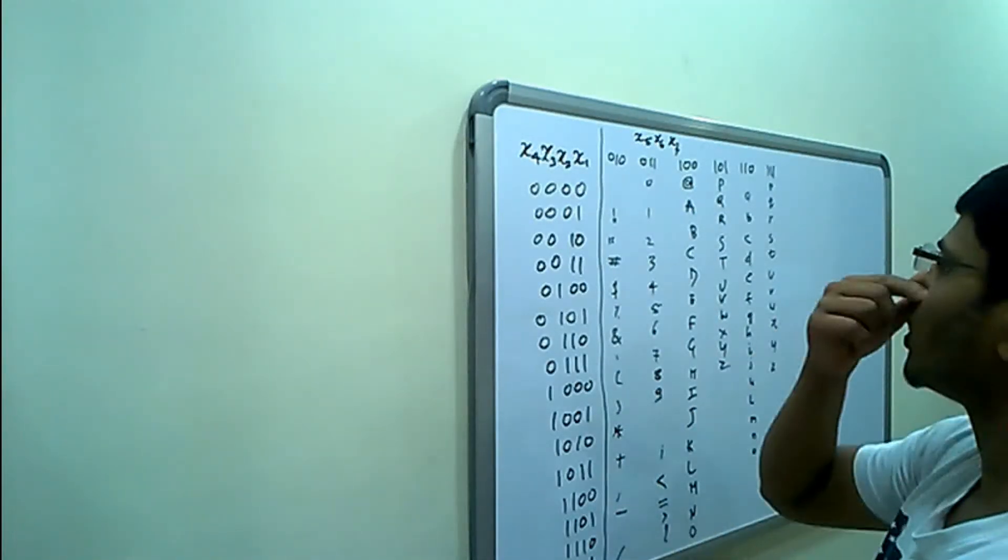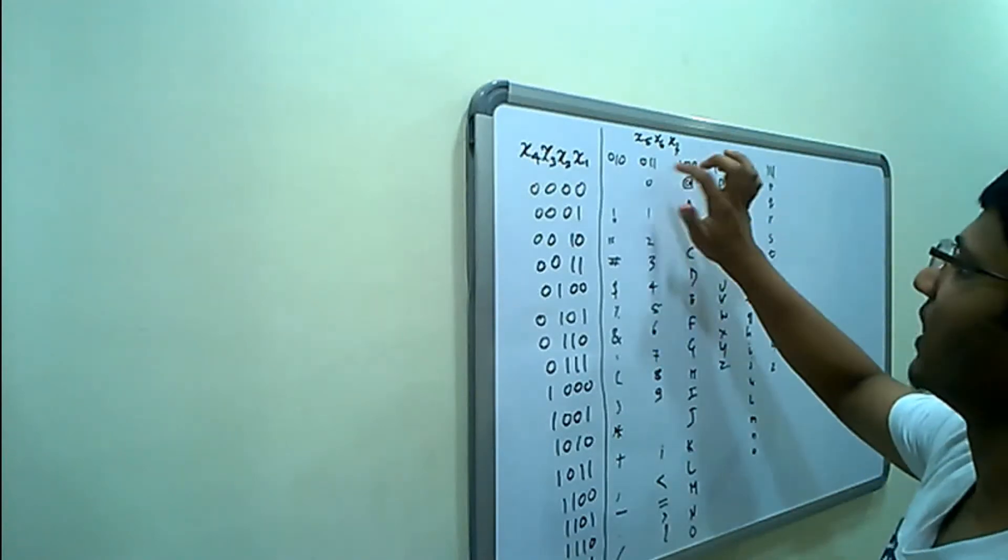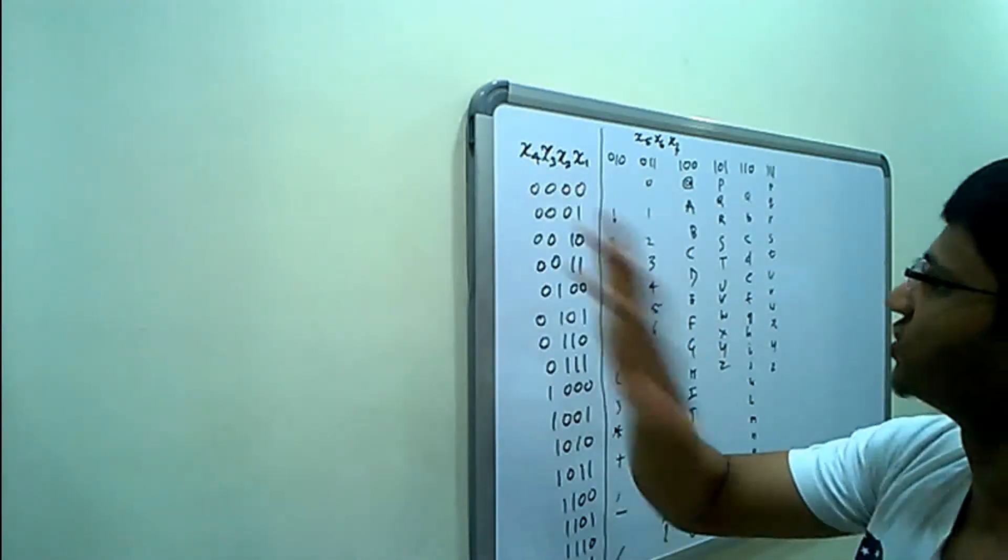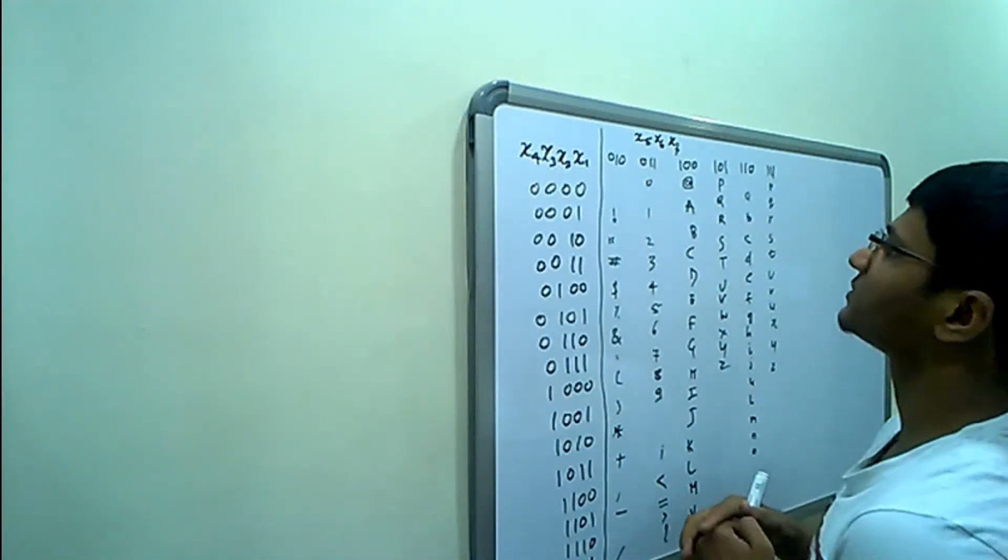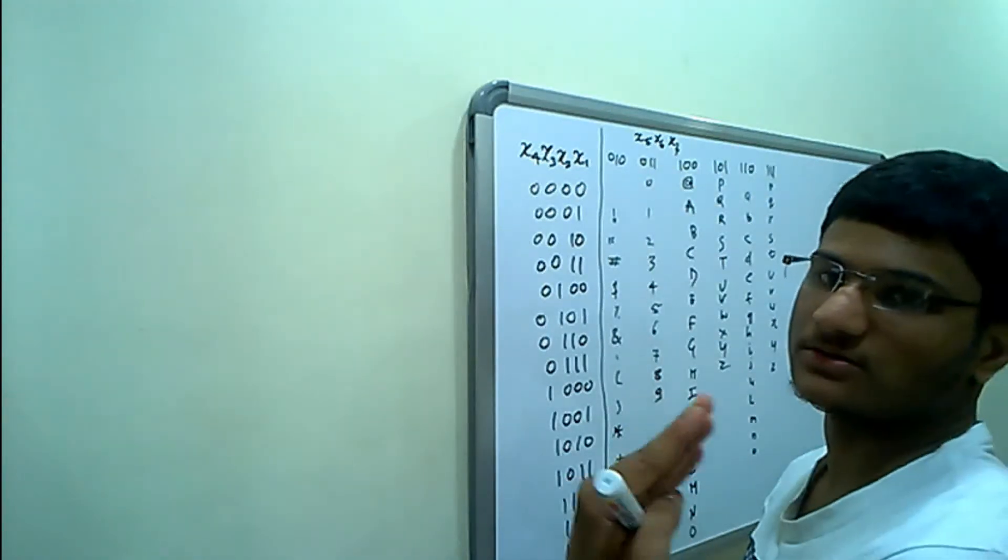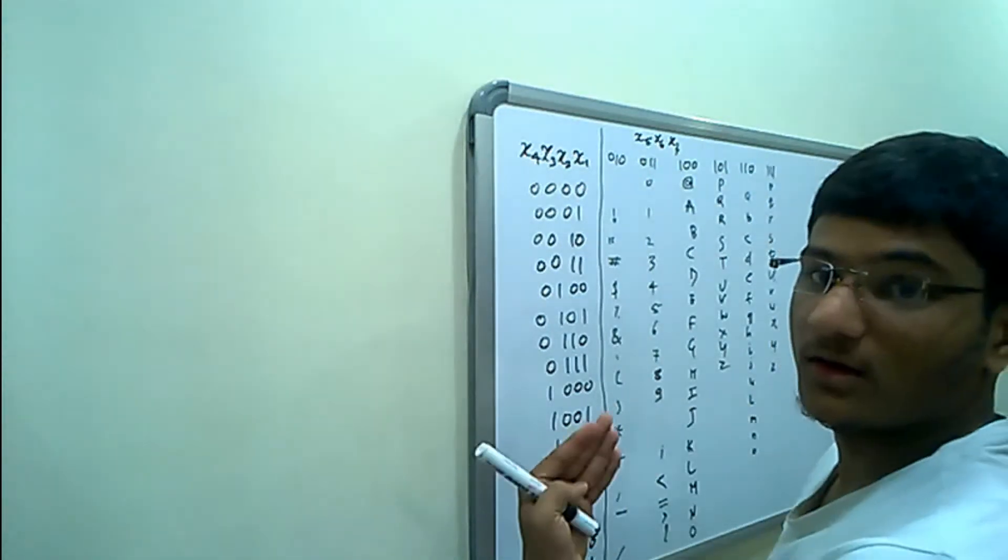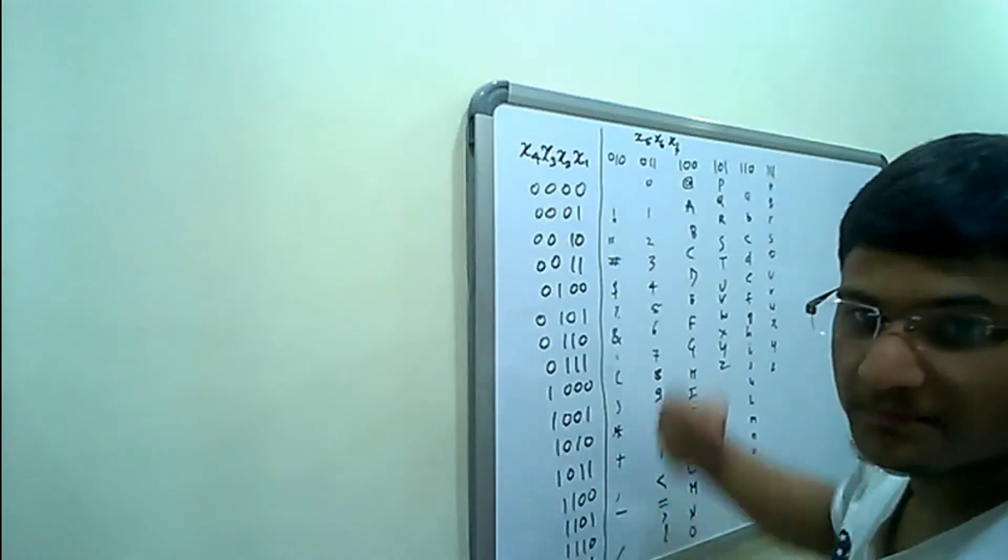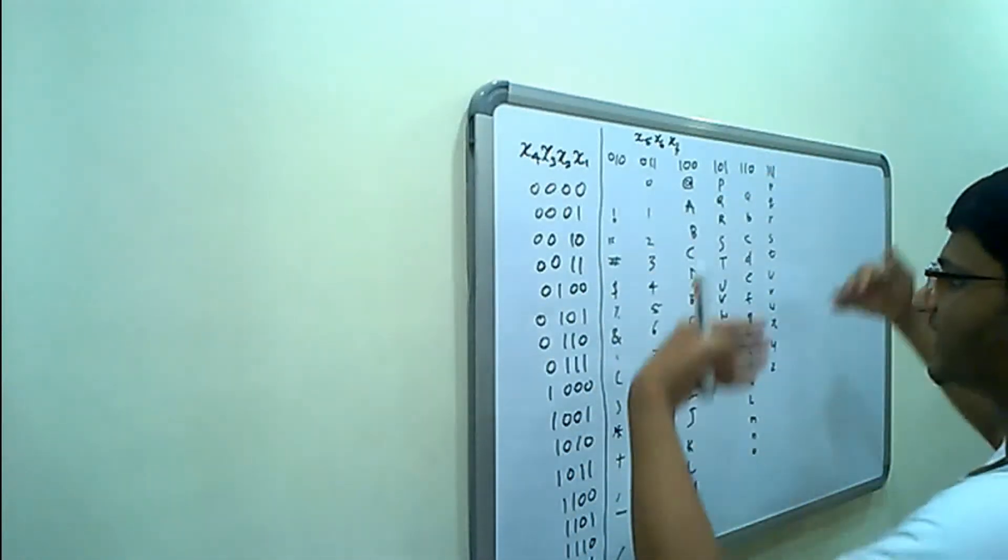So in this way, if you want to type zero, you will type as 1100000. This seven-bit code will represent your zero. In this way you can get all the letters and numbers in your ASCII code.